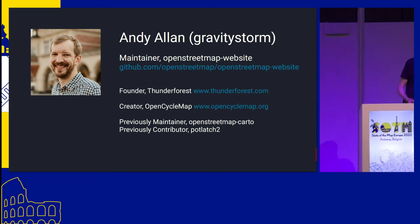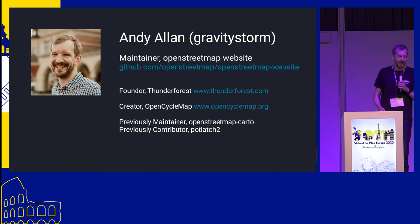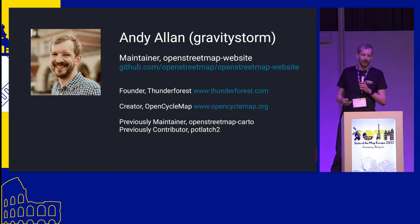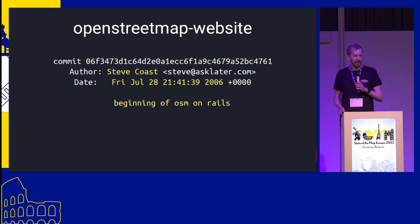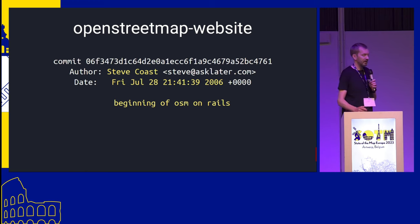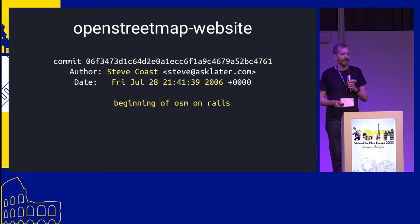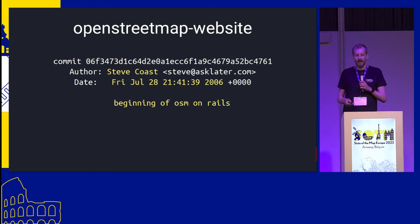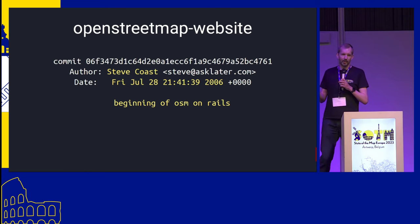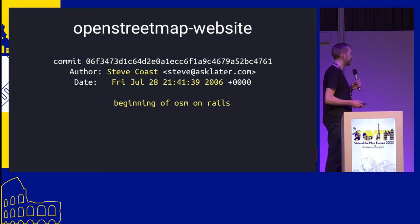I'm one of the two volunteer maintainers for the OpenStreetMap website, and today I want to give you some background on the project, some of the key challenges we face, and then go into details about what exactly a maintainer is. The OpenStreetMap website project can be traced back to 2006 when Steve Coast started work on it, though 2006 was not the actual start — the first version was a Java application, rewritten into pure Ruby, and in 2006 converted to work on Rails. Sometimes you'll hear us talking about the 'Rails port,' even though it's been 17 years since that happened.